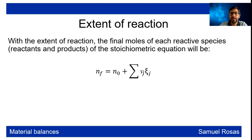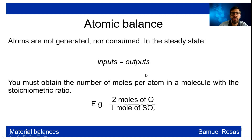If we go by the extent of reaction, since we have more than one reaction, we have to add up the extent of reaction times the stoichiometric coefficient — so we will have more than one extent of reaction. In the atomic balance, input equals output, and you can obtain the number of moles per atom in a molecule using the stoichiometric ratio.